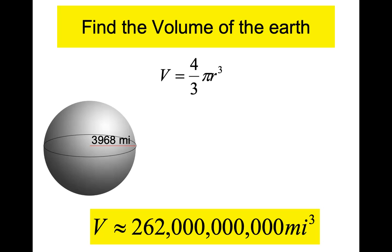Surface area of a cylinder — top of your head — it's two pi r h plus two pi r squared. For me that's one surface area formula that is somewhat memorable because it flows well together.